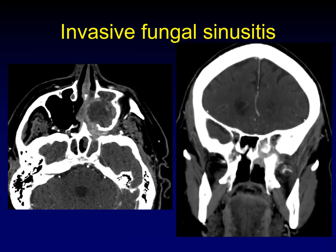Invasive fungal sinusitis spreads like a tumor — it loves perineural involvement. Look at the pterygopalatine fossa, through the pterygomaxillary fissure, and into the infratemporal fossa: lots of erosion, just like a tumor. In coronal, it looks exactly the same with the pterygopalatine fossa packed with replacement of the normal fat. You can see it coming up into the inferior orbital fissure as well as out into the nose through the sphenopalatine foramen — complete filling of all these classic nerve spaces.